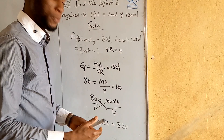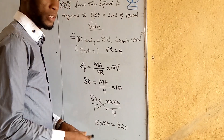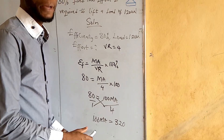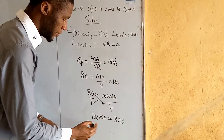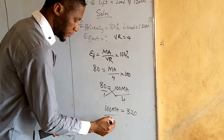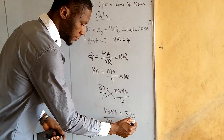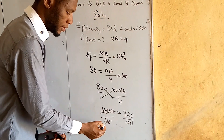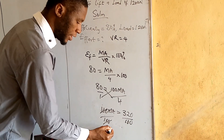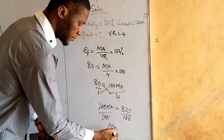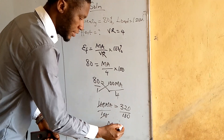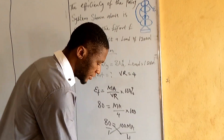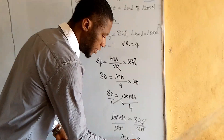We divide both sides by 100 so that we can get the value of MA. Dividing both sides by 100, the 100s cancel each other, and we have the mechanical advantage equal to 3.2.